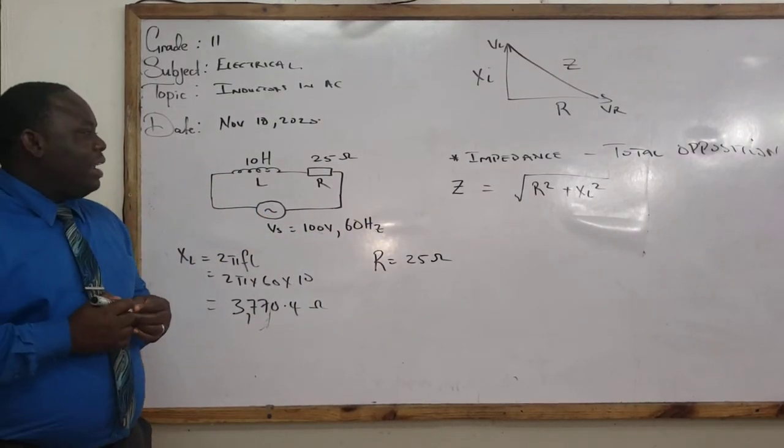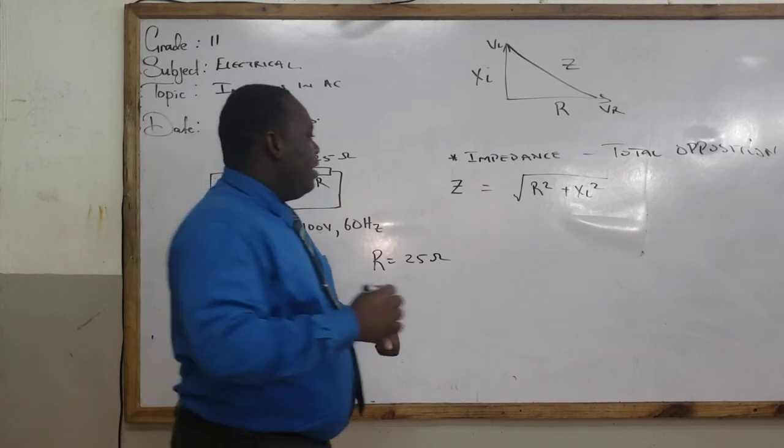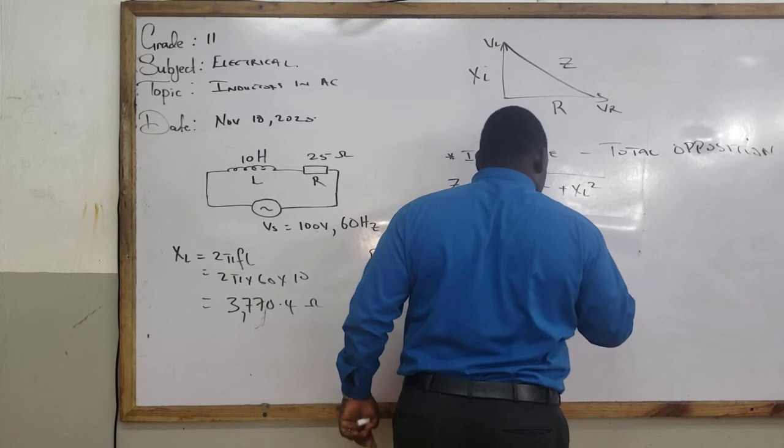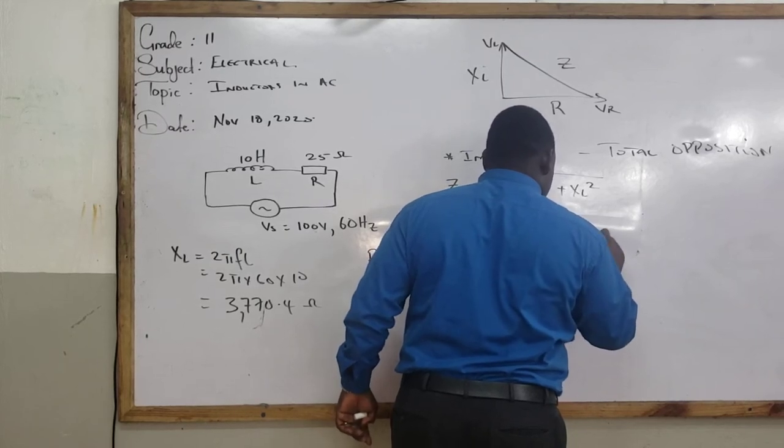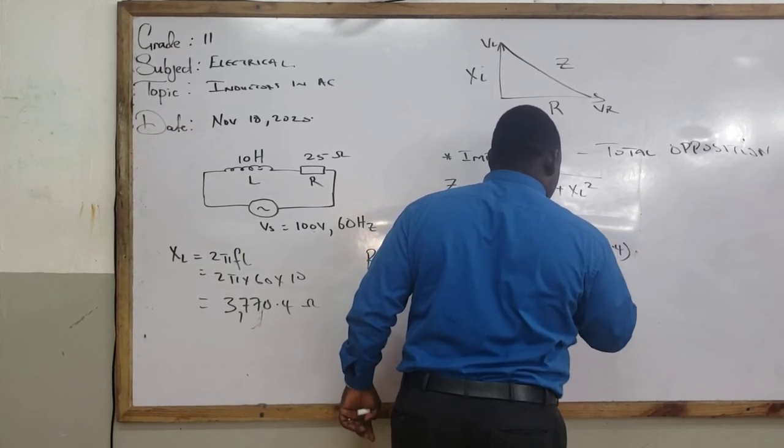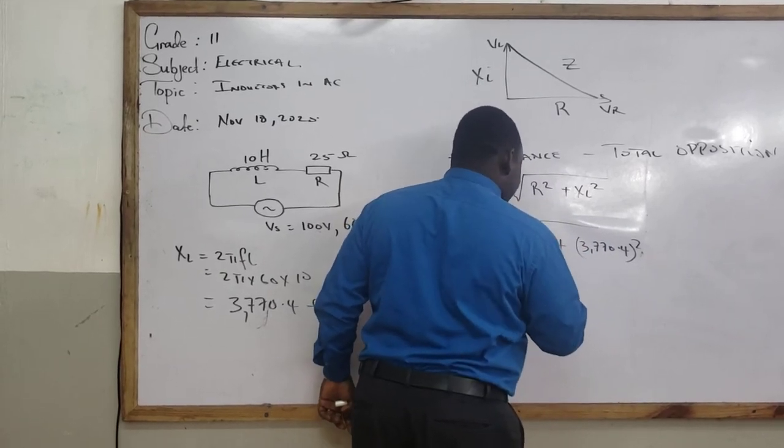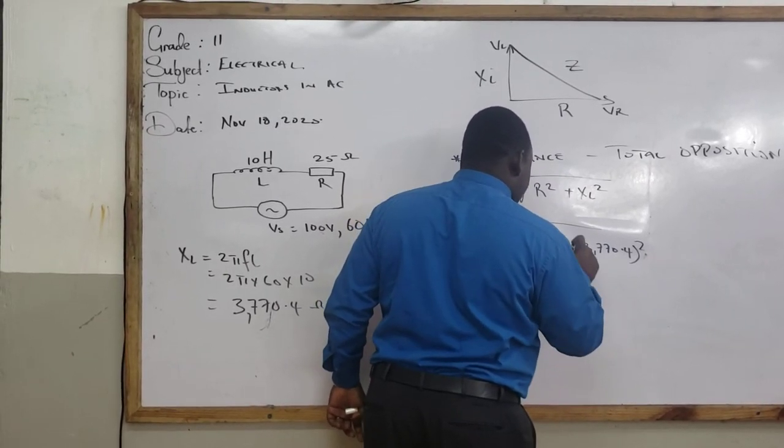Alright? So let's see if we can work that out together. So R squared, which will be 25 squared plus 3770.4 squared. So this is 25 squared.